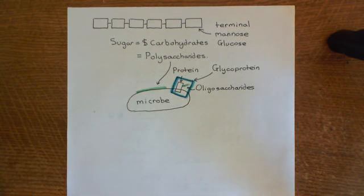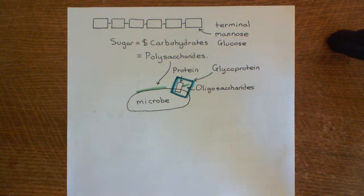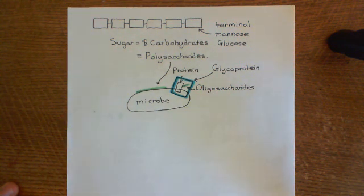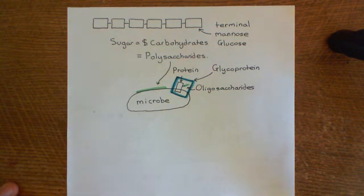Welcome back to this next video in which we're discussing the lectin complement pathway. We've discussed that the mannose-binding lectin complex is going to come into the interstitial fluid when the permeability of the capillaries and the venules becomes increased due to the inflammatory response.